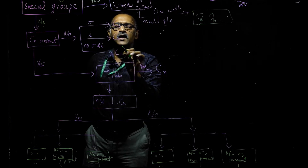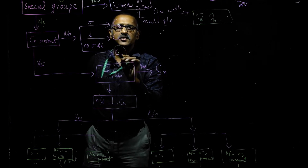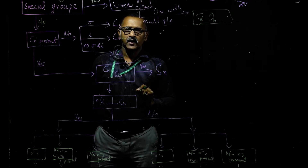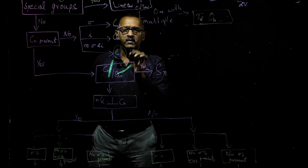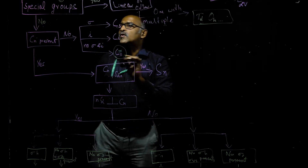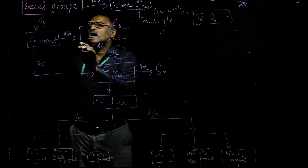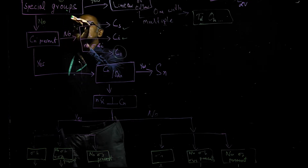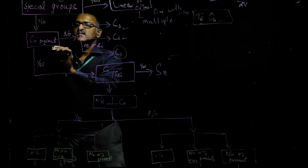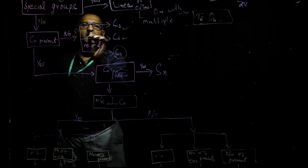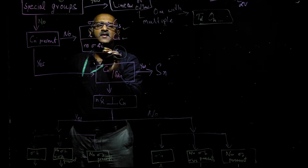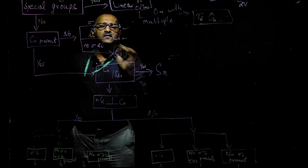C1 represents molecules with the minimum number of symmetry elements. A classic example is the tetrahedral carbon atom with four different substituents. To recap: not a special group → no Cn → contains sigma → Cs; contains I → Ci; no sigma and no I → C1.